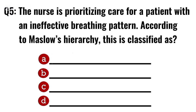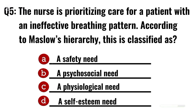Question 5. The nurse is prioritising care for a patient with an ineffective breathing pattern. According to Maslow's hierarchy, this is classified as? Correct option C: A physiological need.